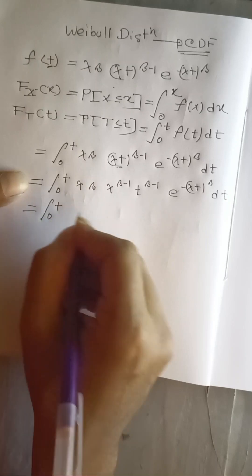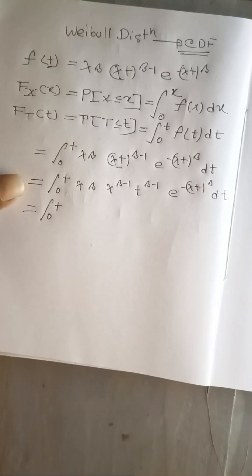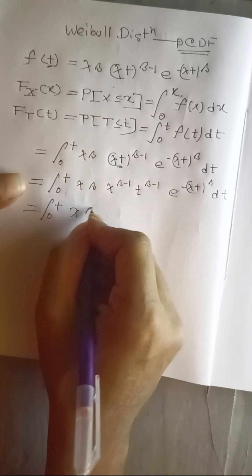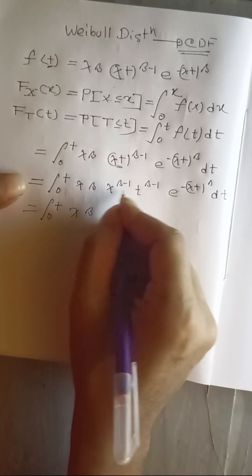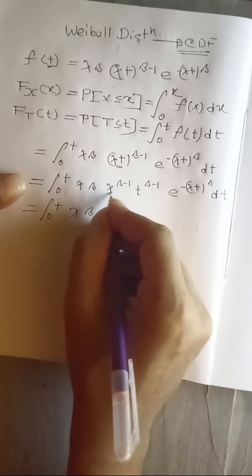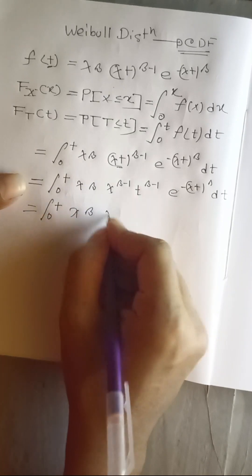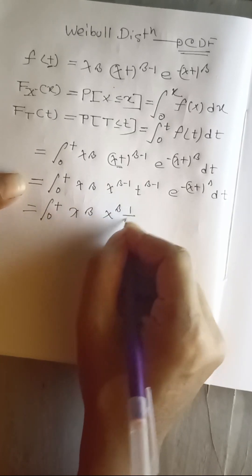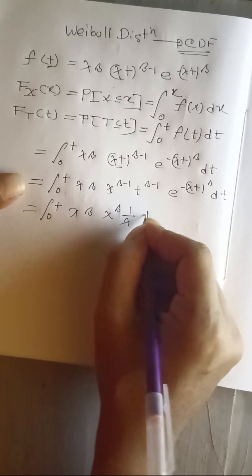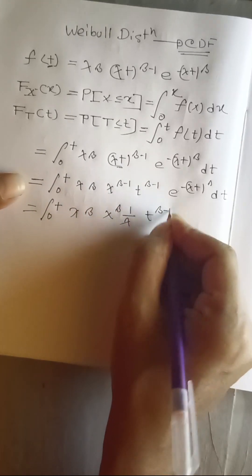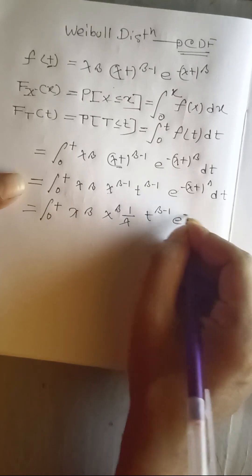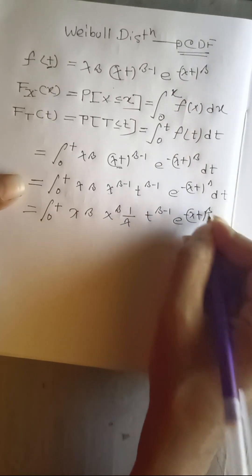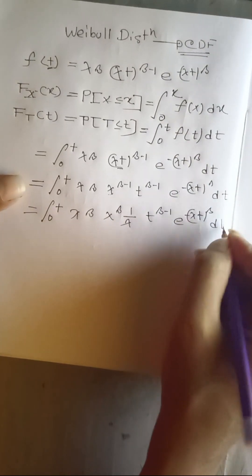We extract the terms and write this as the integral from 0 to t of λβ · λ^β · (1/λ) · t^(β-1) · e^(-(λt)^β) dt.